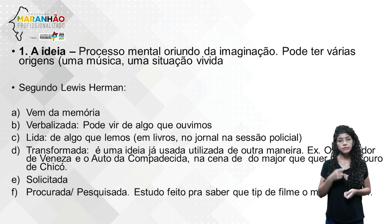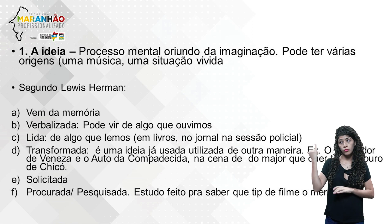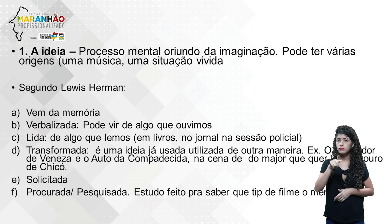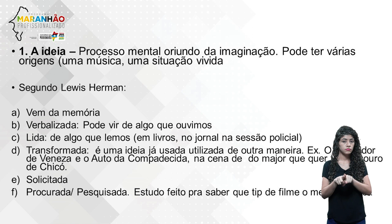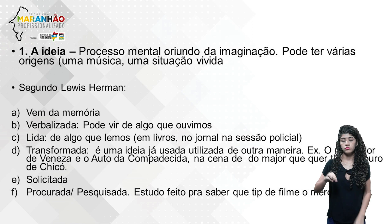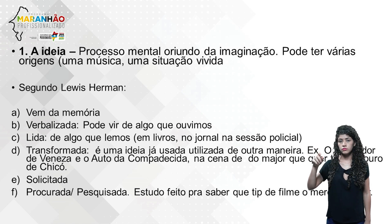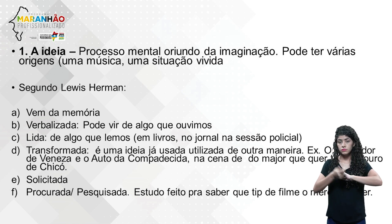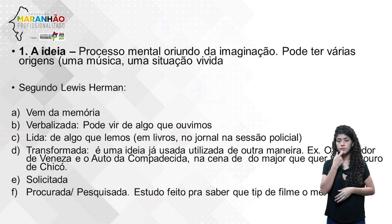O roteiro original vem de uma cena ou música que você viu e criou algo original. O adaptado vem de um livro que você leu e adaptou para roteiro. A ideia também pode ser transformada: algo já usado que você vai utilizar de outra maneira. O Mercador de Veneza e O Auto da Compadecida são exemplos de transformação — você readapta e reutiliza de outra maneira para escrever um roteiro novo.